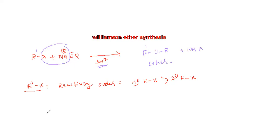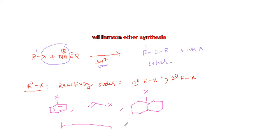One more condition: aryl halides — like halobenzenes — and vinyl halides, and bridged head carbons, this type of halide does not involve in the preparation of ethers from Williamson synthesis. These give no reaction because the halogen lone pairs are involved in resonance — it is not acting as a single bond, it is acting like a double bond.